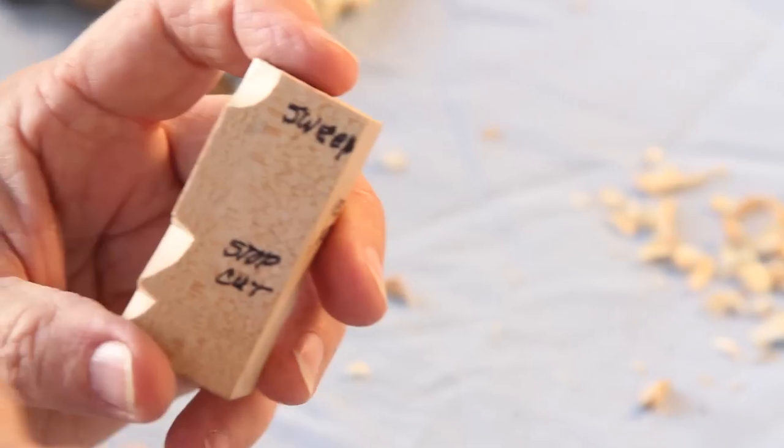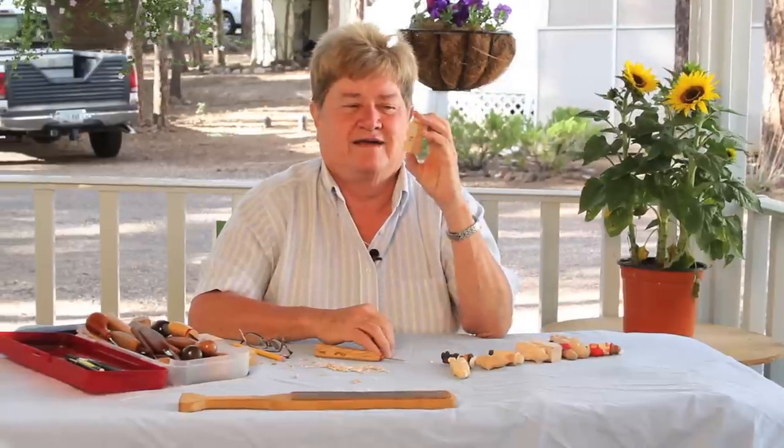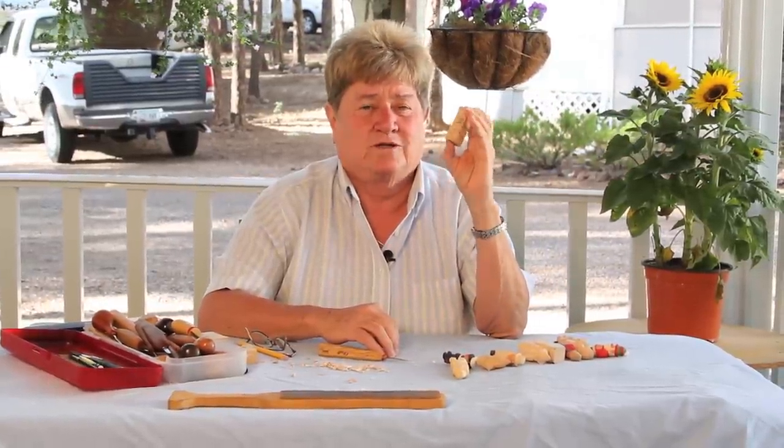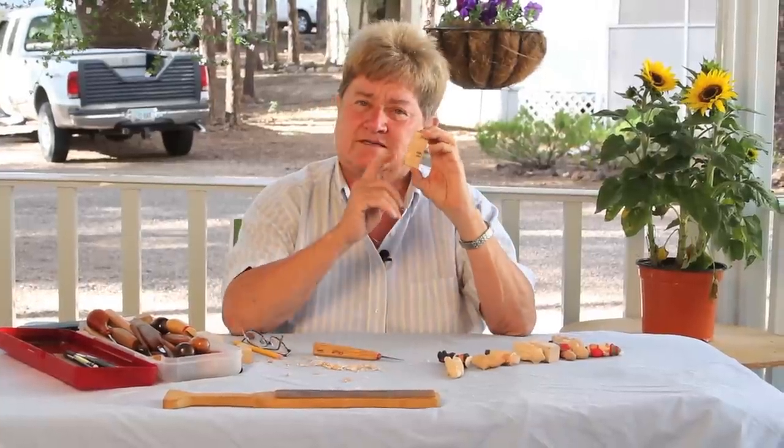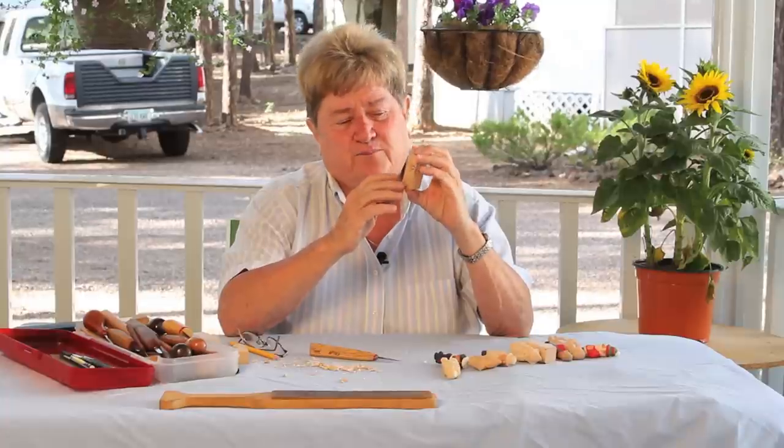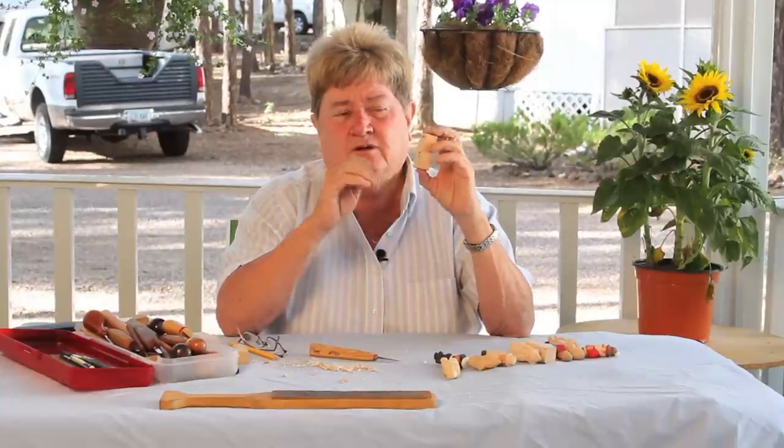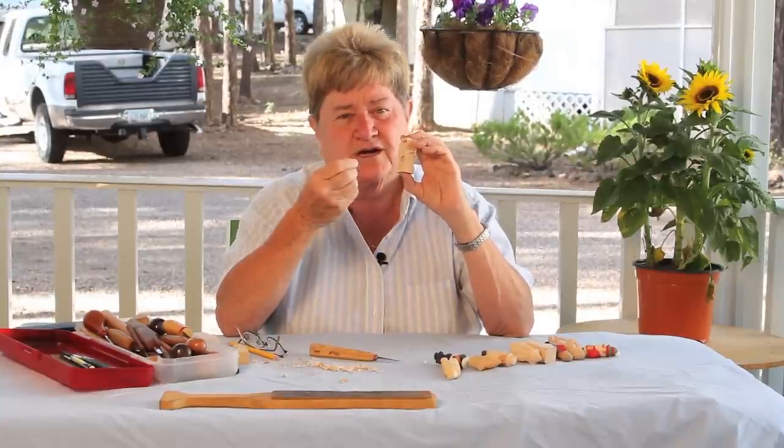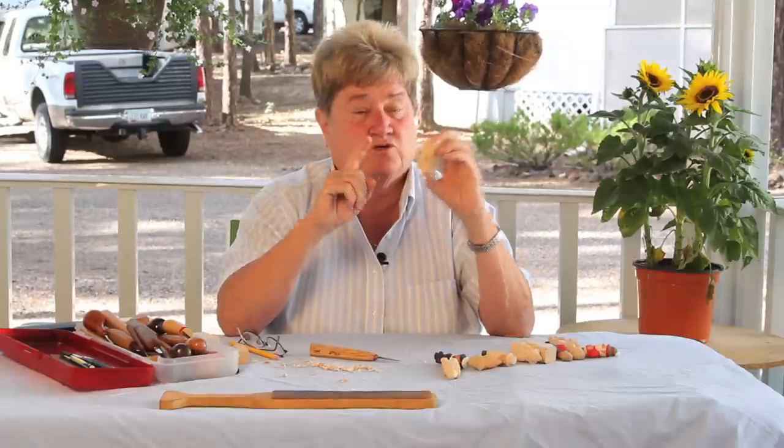You can always go in deeper, but it's better if you don't cut the nose off. We've got our four basic cuts. Once you have those down and you practice them, get a piece of wood and practice the V cut, the pyramid, the sweep. Remember, don't twist your knife. You'll break that tip off. You don't want to do that.